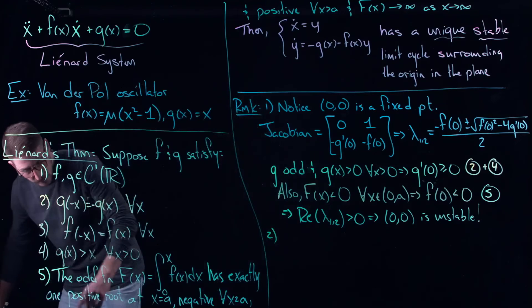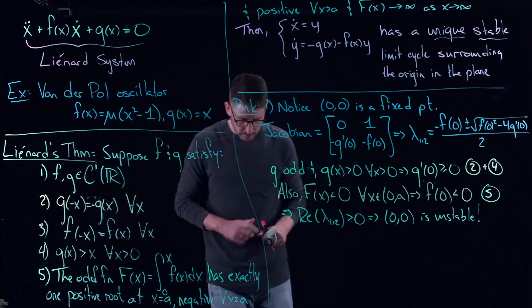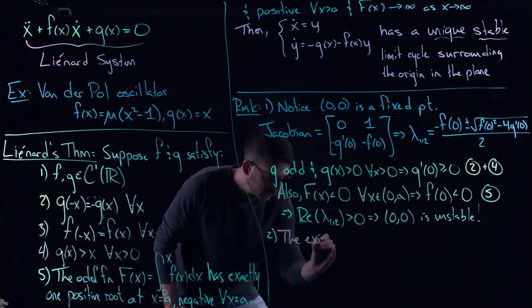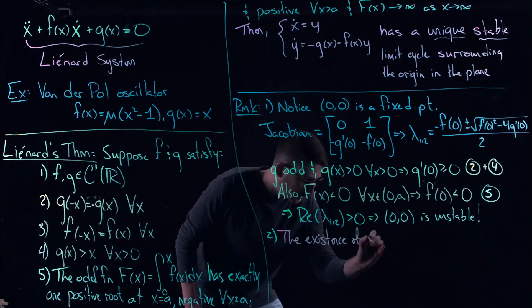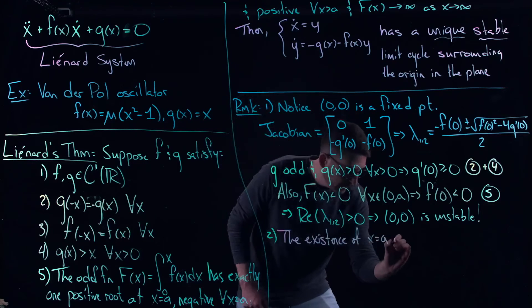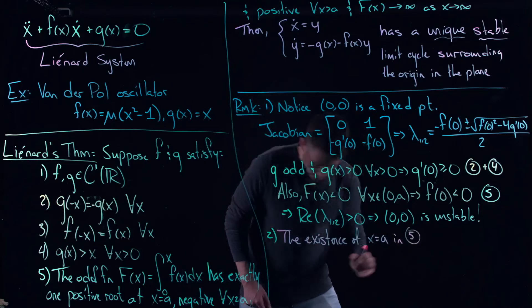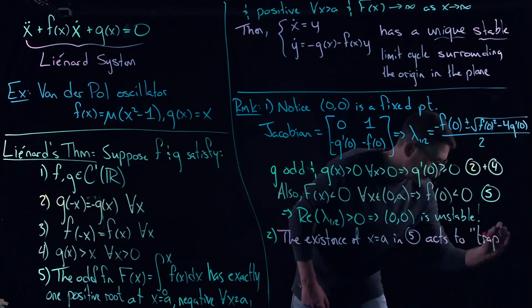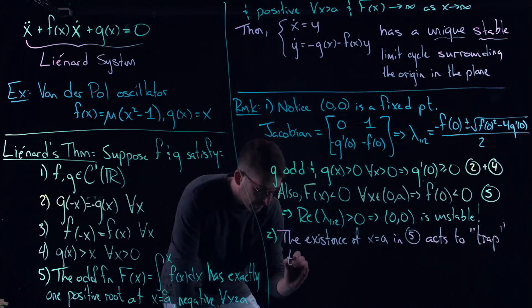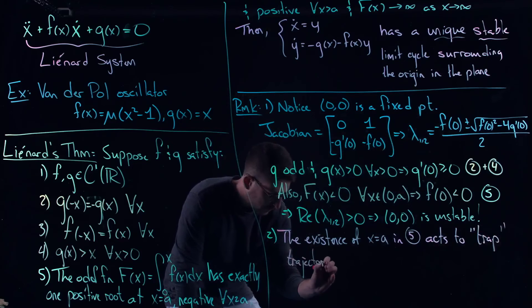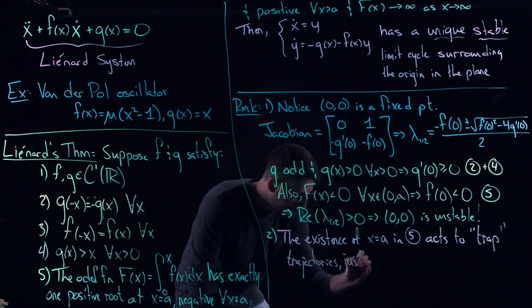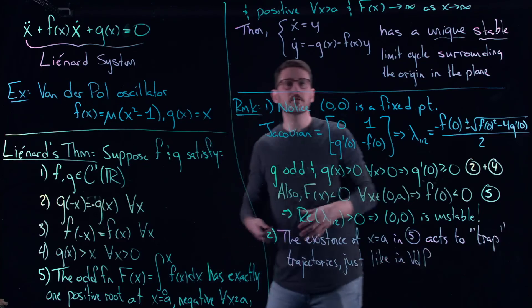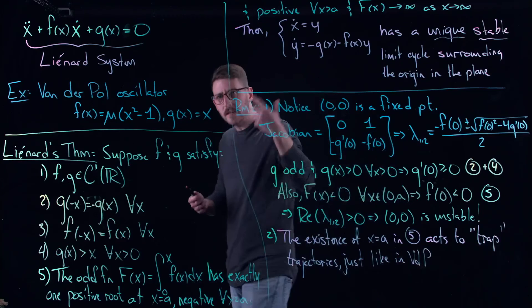I can guarantee that if trajectories stay in that trapping region they are not going to the origin because it's unstable, right? We did this with chemical oscillations and the Rosenzweig-MacArthur model, you know this is pretty standard, this is something that we can do pretty well. Now there's another thing that this condition five actually helps us when we use a trapping region here. So in fact the existence of x equal to a in five acts to trap trajectories just like